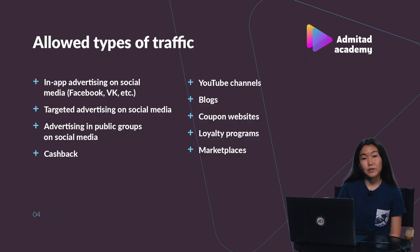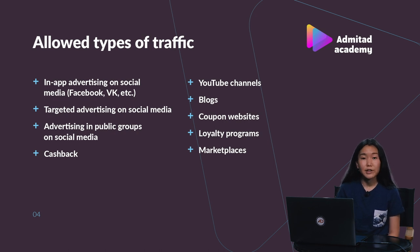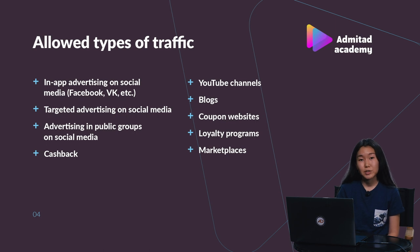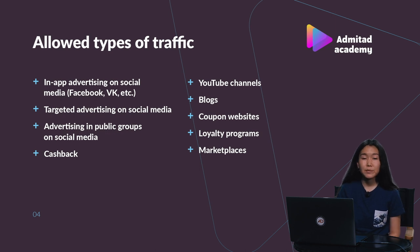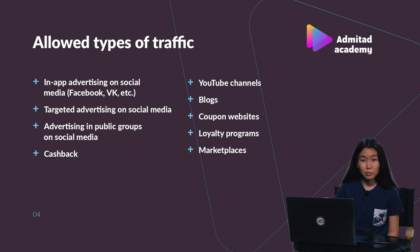So how do we begin to work with AliExpress's program? First, we need to get familiar with allowed and forbidden types of traffic. The allowed types of traffic mean that the advertiser allows publishers to drive traffic from these sources. For example, a publisher can create a page on Facebook and post affiliate links there and get commission from each purchase made through these links. The allowed types of traffic are in-app advertising, social media — Facebook, Instagram, etc. — cashbacks, YouTube channels, blogs, loyalty programs, coupon websites, and marketplaces.